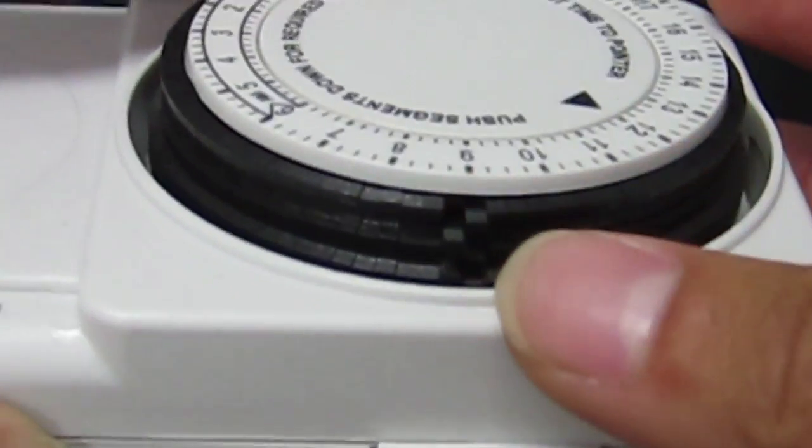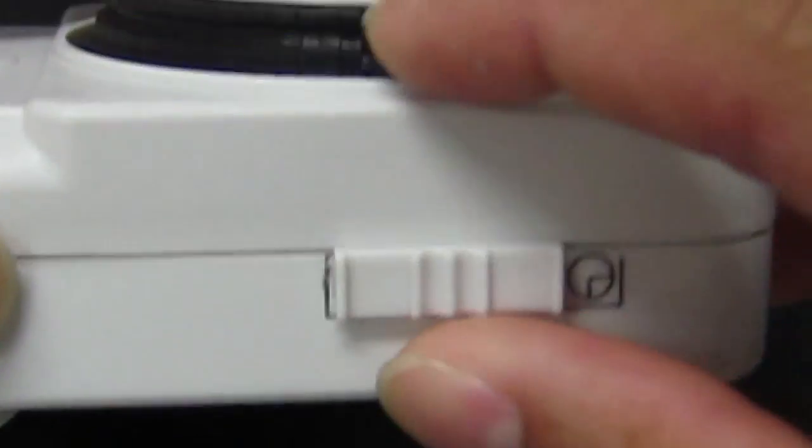The way the timer works is that you press down the black segments with your fingernail or pencil for when you want the lights to go on. Each segment is 15 minutes and 4 segments equal an hour.